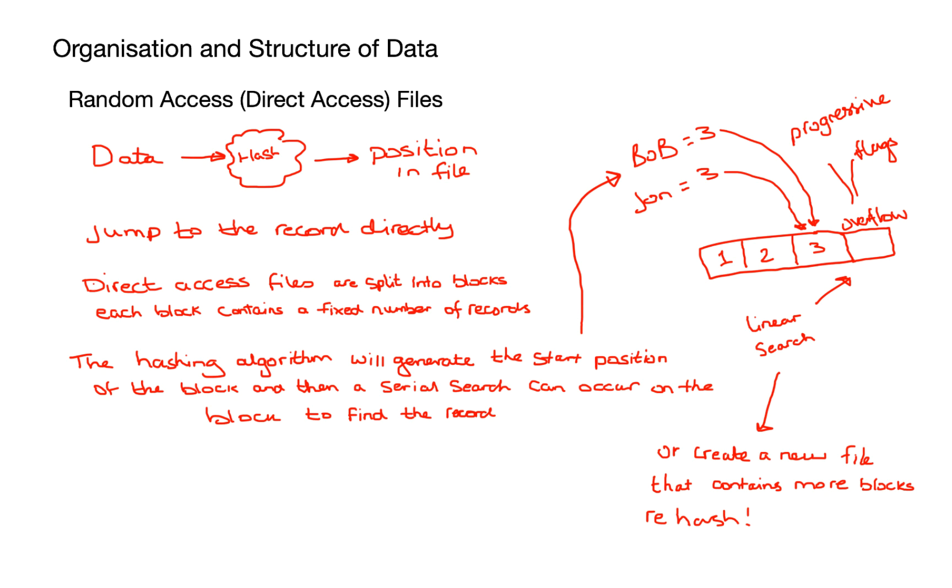So just to recap there then, all we've looked at in this video is looking at what fields, records, and files are. We looked at variable and fixed length records. And then we looked at the four different file handling methods that we need to be aware of. And they are serial, sequential, index sequential, and direct or random access. I do hope you found this video useful and that you watch the other videos in the series. Thank you very much and I'll see you again soon.